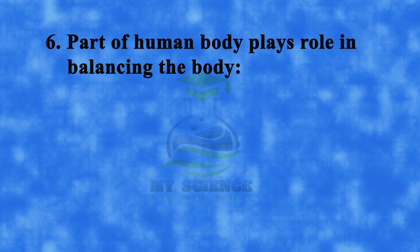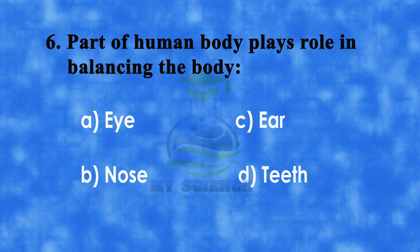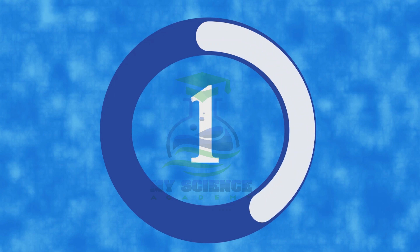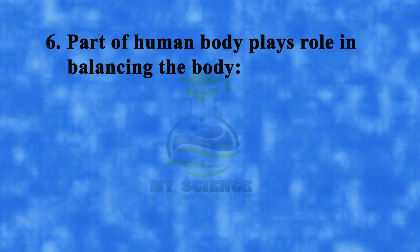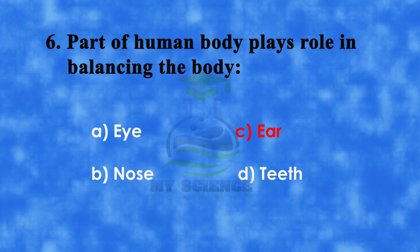Number 6: Part of human body that plays role in balancing the body. A: eye, B: nose, C: ear, or D: tongue. And correct answer is C: ear.